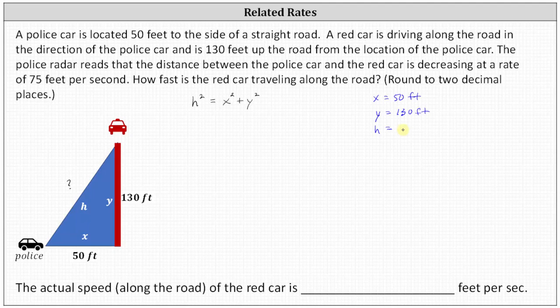But we do know that the distance between the police car and the red car is decreasing at a rate of 75 feet per second, which we represent as dH/dt. So we know dH/dt is negative 75 feet per second. And to determine how fast the car is moving down the road, we need to determine dy/dt, how fast Y is changing with respect to time.